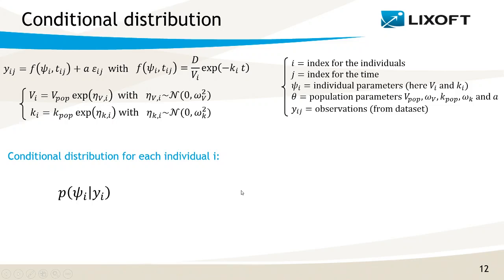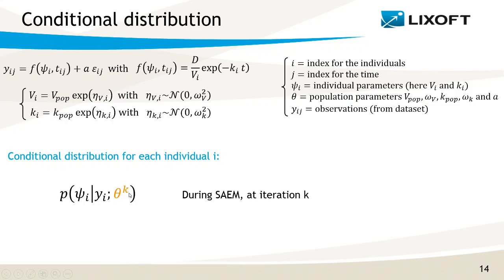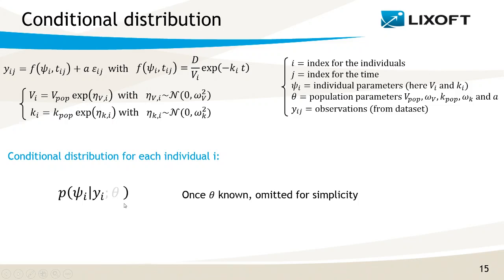The distribution we use all the time in Monolix tasks is the conditional distribution. It is the probability distribution of the individual parameters for each individual given the observed data for that individual. This distribution also depends on the estimated population parameters theta. During the estimation of the population parameters, we write it with a superscript k to indicate we are working with the current population parameters at iteration k of the SAEM algorithm. Once the estimation is finished, the population parameters theta are known and we tend to omit it for simpler syntax, but it is always there.